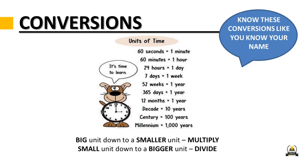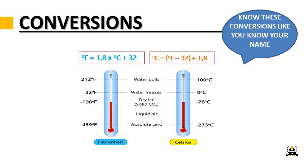For time conversions, we have seconds, minutes, hours, days, weeks, months, decades, centuries, and millennium. The rule is the same: moving from a big unit to a smaller one, you multiply; from a small unit to a bigger one, you divide. For example, 60 seconds equals 1 minute. If you have 60 seconds and want to know how many minutes, divide by 60. If you have 1 minute and want to know how many seconds, multiply by 60.